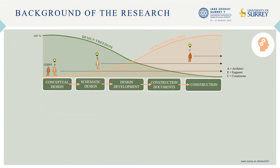One of the first steps of my research was to analyze the traditional design process where the tasks are divided and solved separately in a linear sequential flow as illustrated here. The architect is in charge in the first phases where the design freedom is at its highest, and then the engineer is implemented later when the form of the design is already to a certain extent fixed.